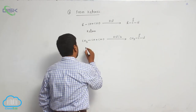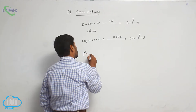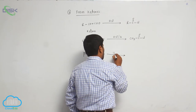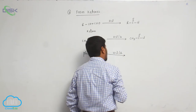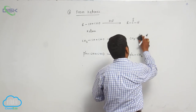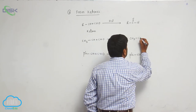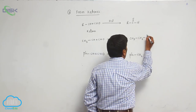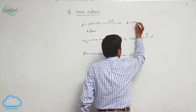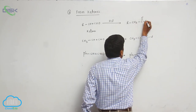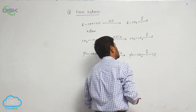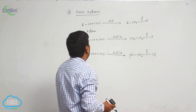Next, phenyl CH=C=O reacts with hydrochloric acid followed by heating to form Ph-CH2-C(=O)Cl, which is the corresponding acid chloride. This product is Ketene-derived.